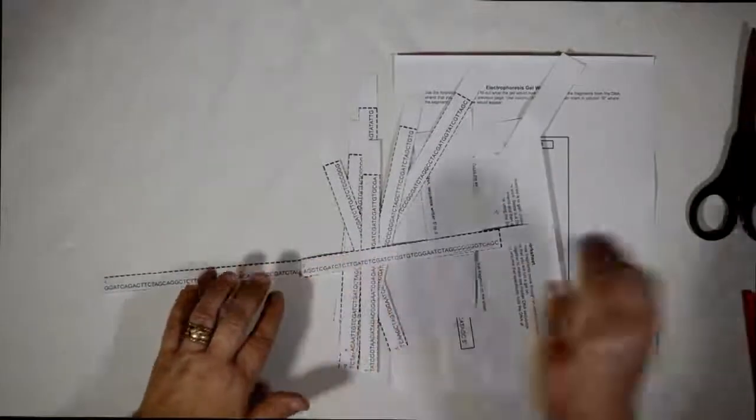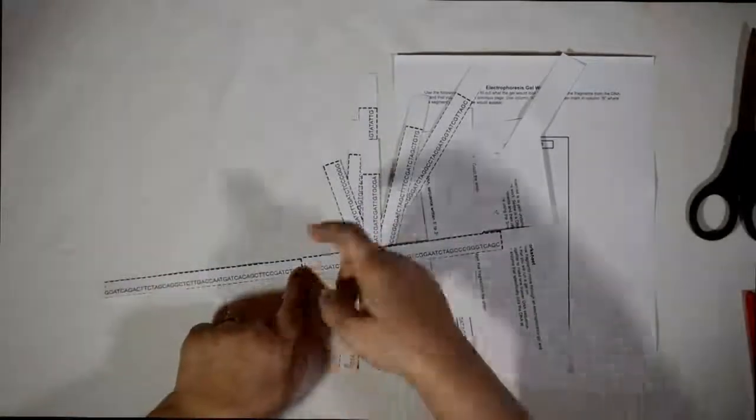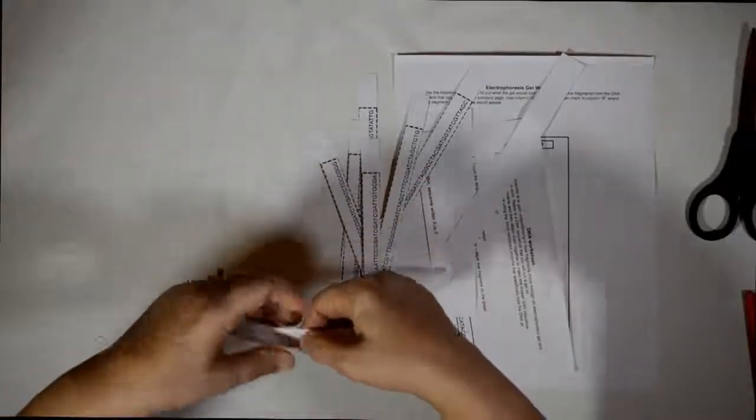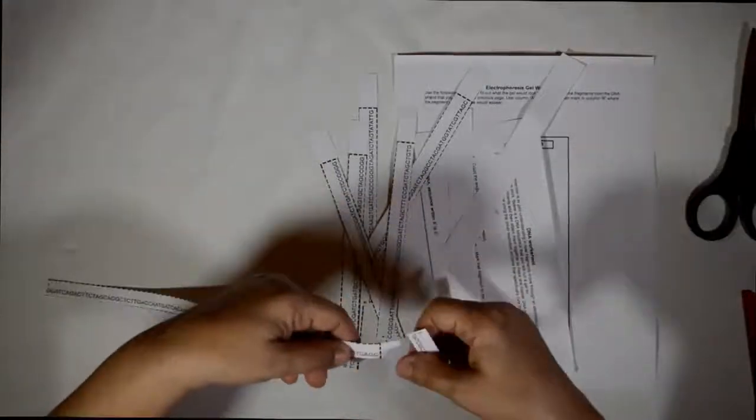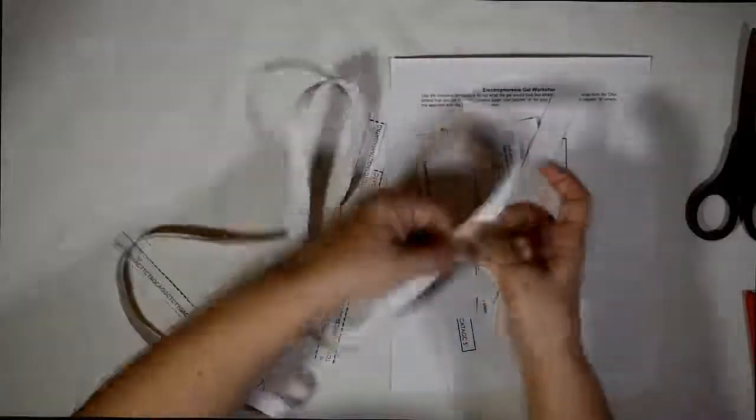So what you do now, you just get a piece of tape and you attach one on two, two on three, three on four, and so on. So you cut out all those 10 fragments and you attach them all together to make one DNA sequence.